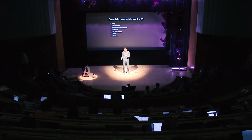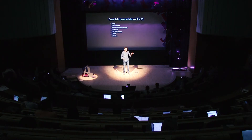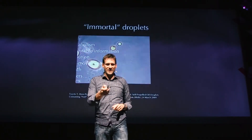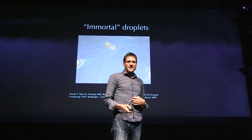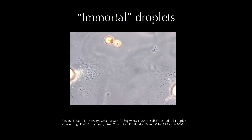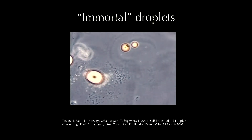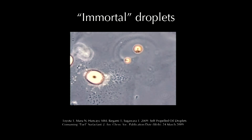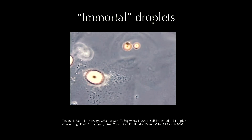We then thought about the system differently: instead of putting the fuel inside the droplet like in a car, we put the fuel dispersed in the environment, so the droplet needs to move into the environment to find fresh sources of fuel. This video shows microscopic small droplets that don't have fuel in them but move into the environment where the fuel is dispersed. I call these immortal droplets because they'll continue to do this activity as long as we supply them with more fuel in the environment — they will never die, though they're still just chemical systems.